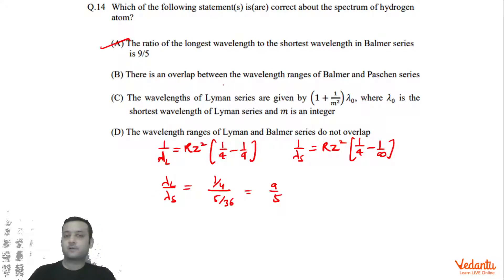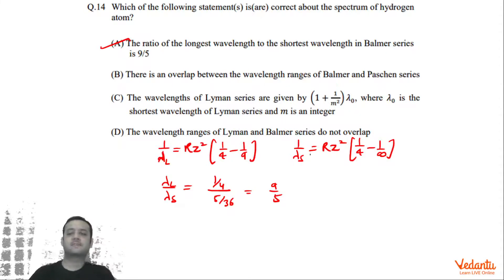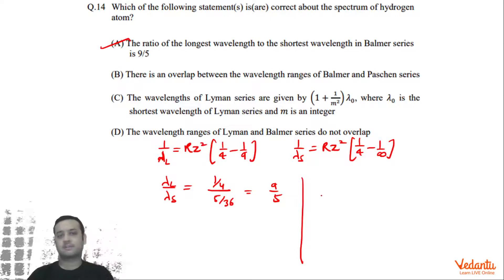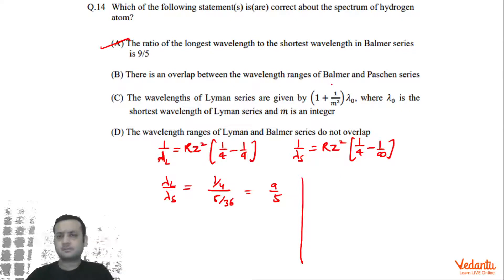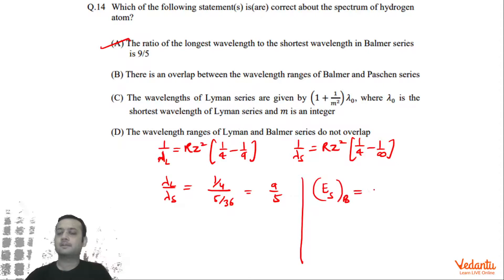The next part asks whether there is an overlap between the wavelength ranges of the Balmer and Paschen series. If the wavelength ranges overlap, their energy ranges will also overlap, since E = hc/λ. So let's find the smallest possible energy of the Balmer series.